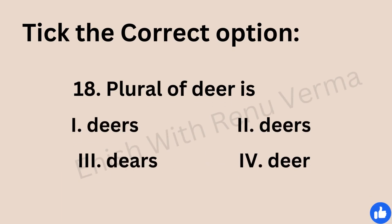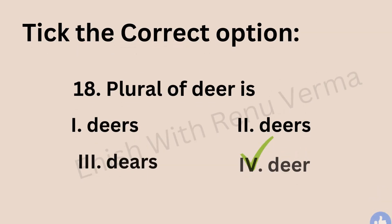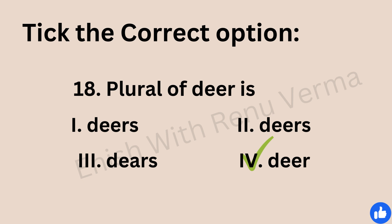Question number 18: the plural of 'deer'. Options are deers, deers, deers, or deer. The correct answer is 'deer' only — the plural of deer is deer. There are many words in English that are the same in their singular and plural form. If you know any such words, please comment in the comment section.